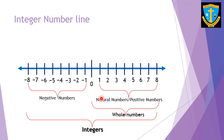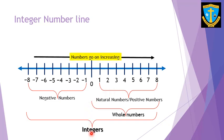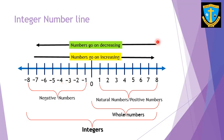To summarise: integers are zero, negative numbers, and positive numbers. The numbers go on increasing as you move to the right. Moving from right to left, the values go on decreasing.